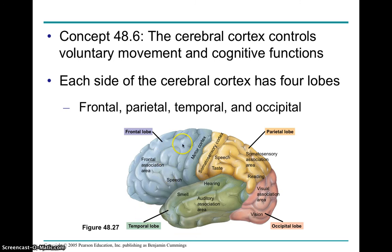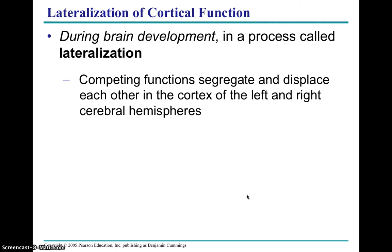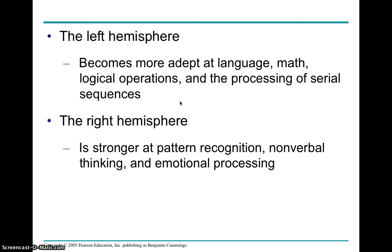The brain has four lobes: the frontal lobe, the parietal lobe, the occipital lobe, and the temporal lobe. You mainly need to know the lobes without needing to memorize the function of each right now. As the brain develops in an embryo, you get lateralization, where the two sides begin to serve different purposes. The left hemisphere becomes very adept at language, math, and logical thinking. The right hemisphere is good at pattern recognition and emotional processing.